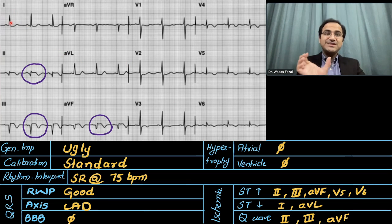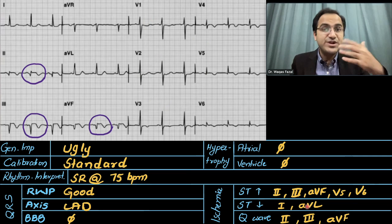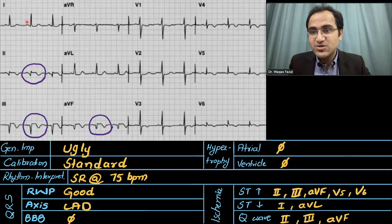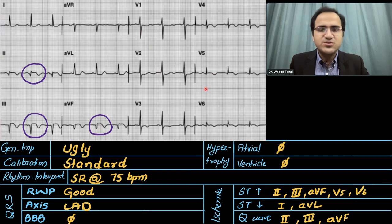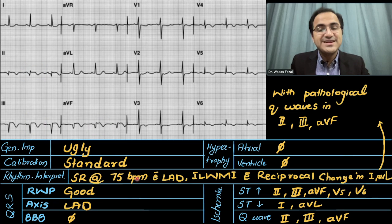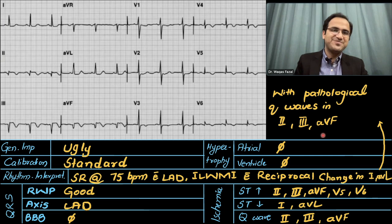For ST segment depression: leads 2, 3, AVF and leads 1, AVL are in opposite directions. Lead 1 is showing ST segment depression, AVL is showing ST segment depression, and V2 is showing ST segment depression. For pathological Q waves: there is a pathological Q wave in lead 2, a very prominent pathological Q wave in lead 3, and a prominent pathological Q wave in AVF. No pathological Q waves in the precordial leads. Interpretation: sinus rhythm at 75 beats per minute, left axis deviation, inferior wall MI with reciprocal changes in leads 1, AVL, and pathological Q waves in leads 2, 3, AVF.